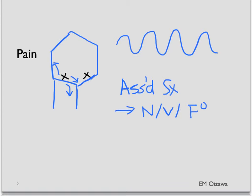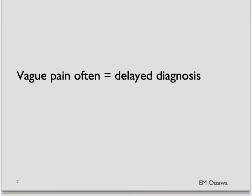Associated symptoms can include nausea, vomiting, or a low-grade fever. Since the pain can often be vague or intermittent, there often is a delay in diagnosis.